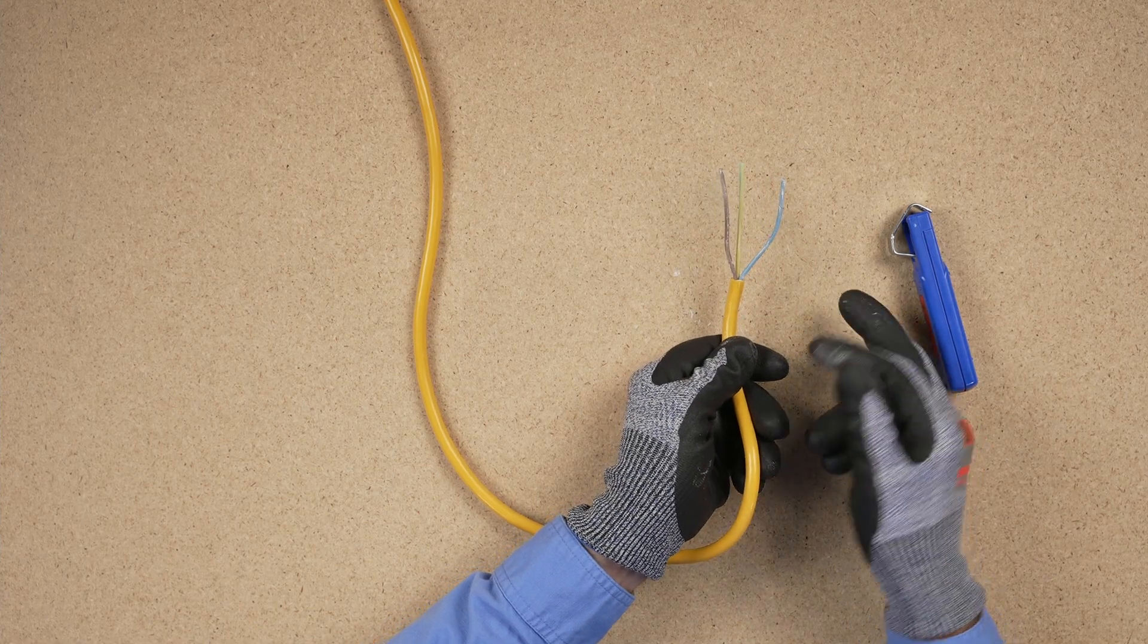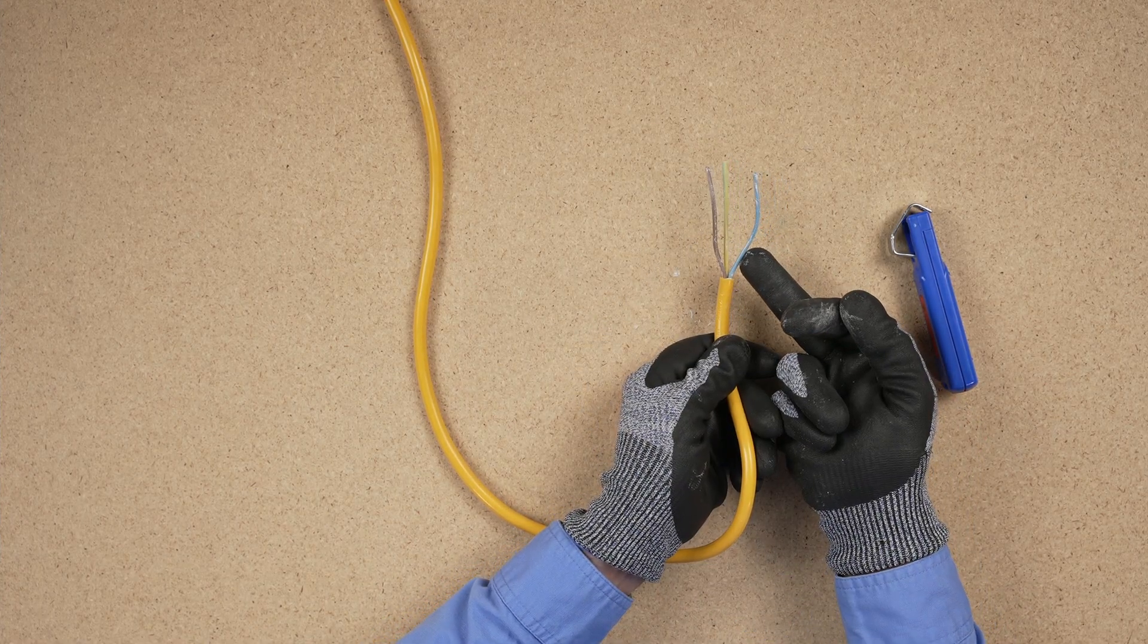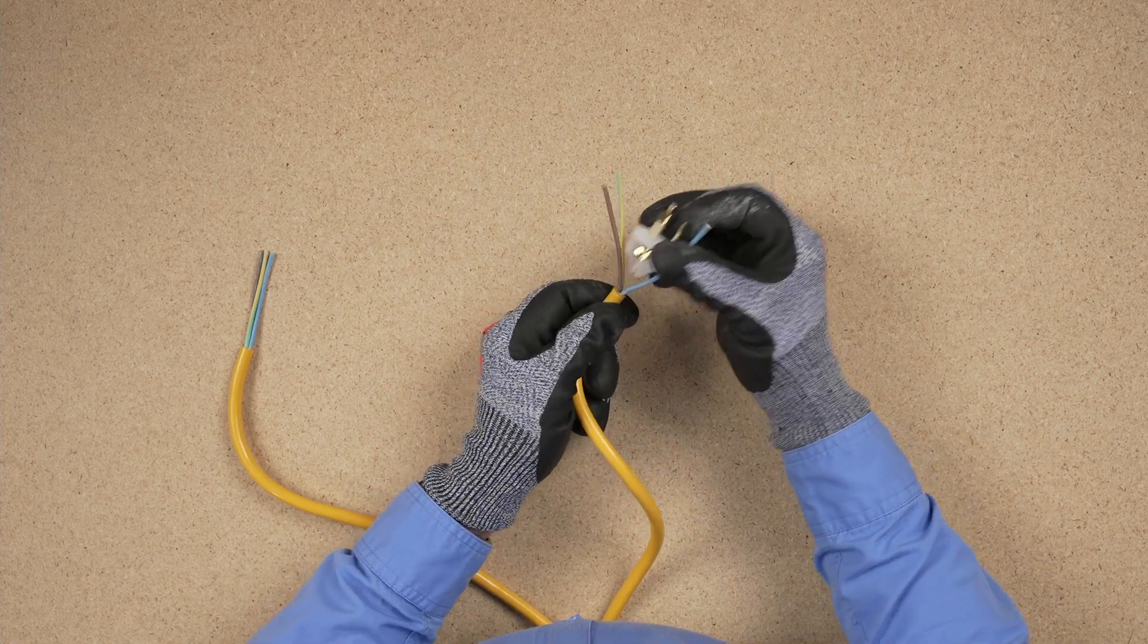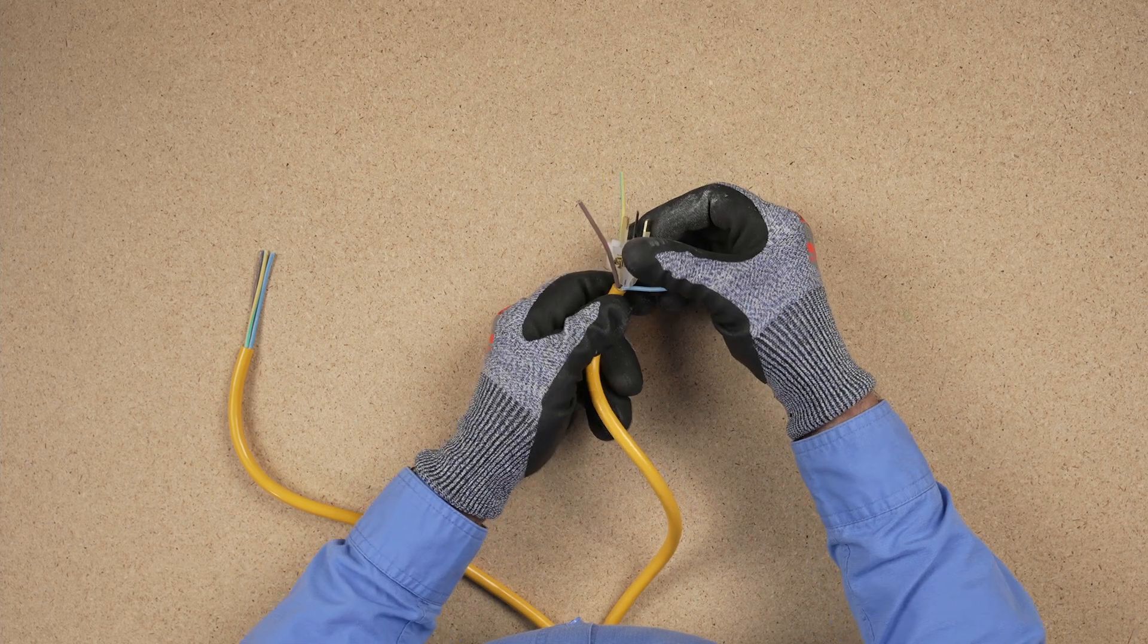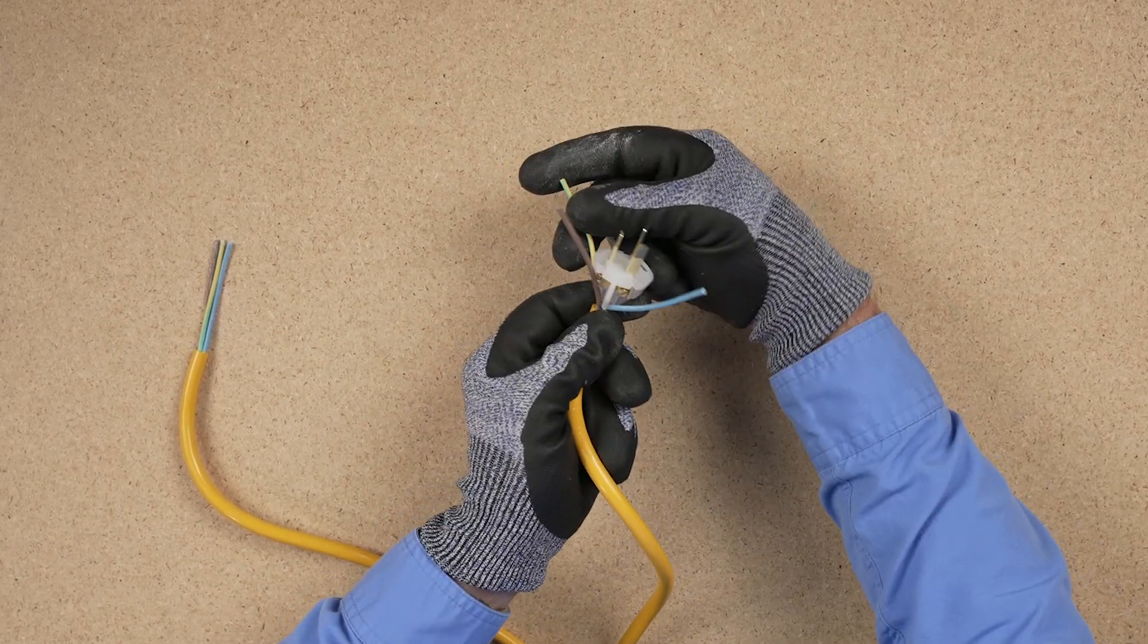The colour coding for a single phase extension lead uses brown as active, light blue as neutral, and green yellow as earth. Once you cut the required length of the cord from the cable spool, you must orientate it correctly to accept the plug and socket that you will fit.